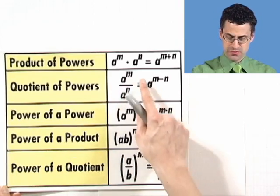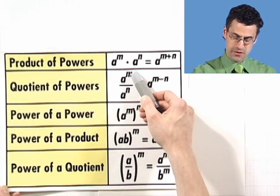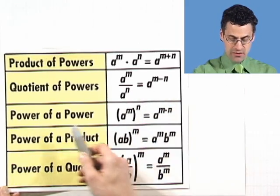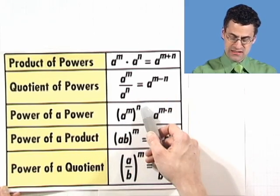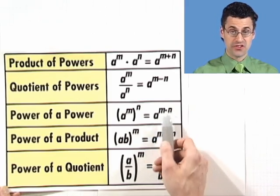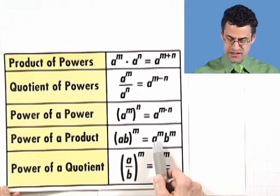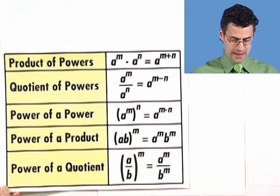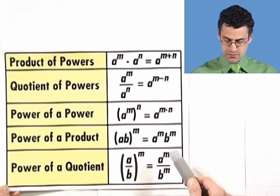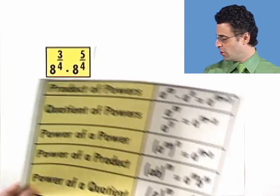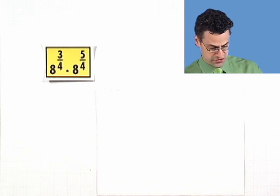Quotient of powers: we take the difference of the exponent of the numerator minus the exponent on the denominator. Power of a power: (a^m)^n, we multiply those exponents. Power of a product: (ab)^m = a^m · b^m. And power of a quotient: (a/b)^m = a^m / b^m. All those rules apply even if the exponents are rational.